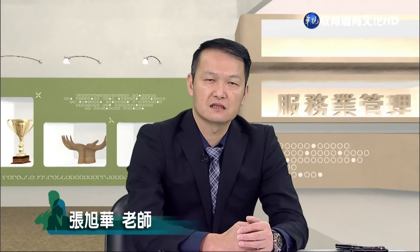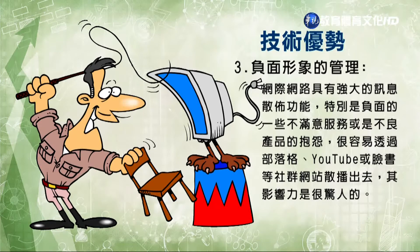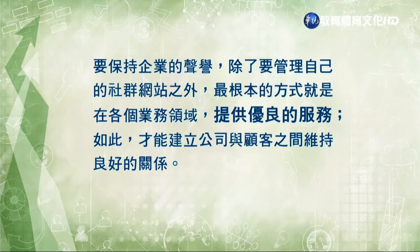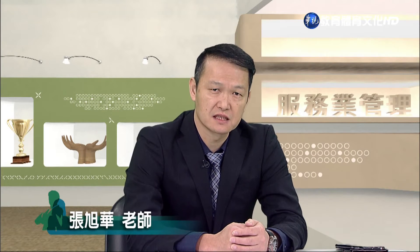這樣的顧客，我們才敢相信他的一些相關的數據。如果你產生一些負面形象的時候你該如何來管理？網際網路具有強大的資訊傳播功能，對於負面的不滿意服務或不良產品的抱怨，很容易透過部落客、YouTube、臉書等社群軟體散播出去，影響力非常驚人。要保持企業聲譽，最根本的方式是在各個業務領域提供優良的服務，才能建立公司跟顧客之間良好的關係，再來就是要開發自己本能的能力，特別是現場服務的能力。